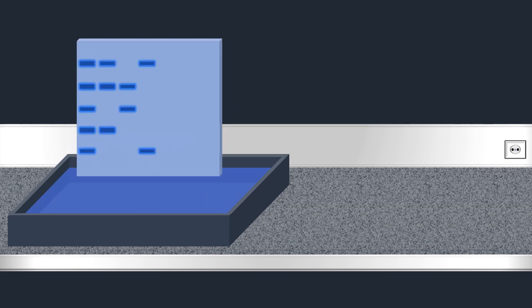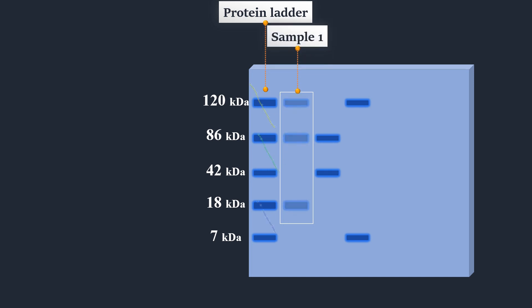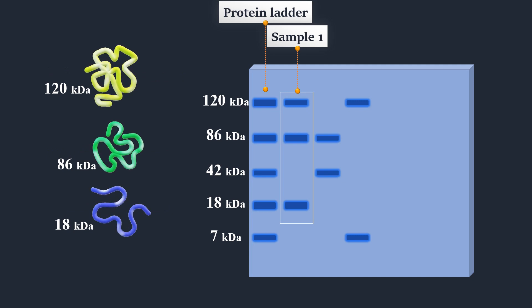After staining, the proteins are detected as blue bands on a clear background. The molecular weight size markers in a separate lane in the gel can be used to determine the approximate molecular mass of unknown biomolecules by comparing the distance traveled relative to the marker.